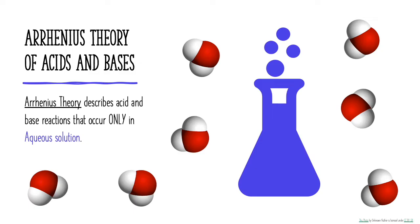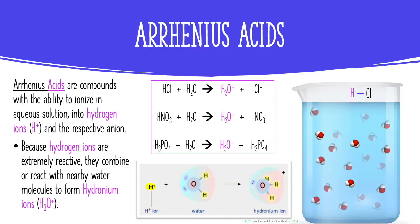The Arrhenius theory of acids and bases describes acid and base reactions that only occur in aqueous solution. An Arrhenius acid is a compound with the ability to ionize in aqueous solution into hydrogen ions and the respective anion depending on the identity of that substance. Because hydrogen ions are extremely reactive, they combine with nearby water molecules to form what's called a hydronium ion, or H3O+.